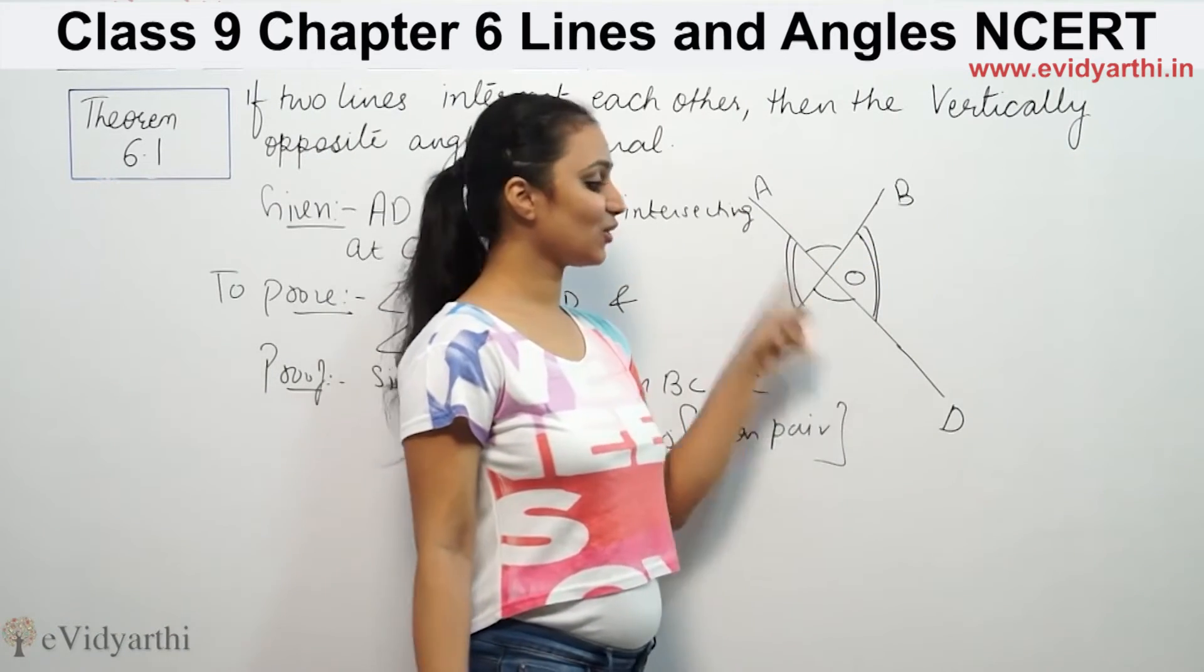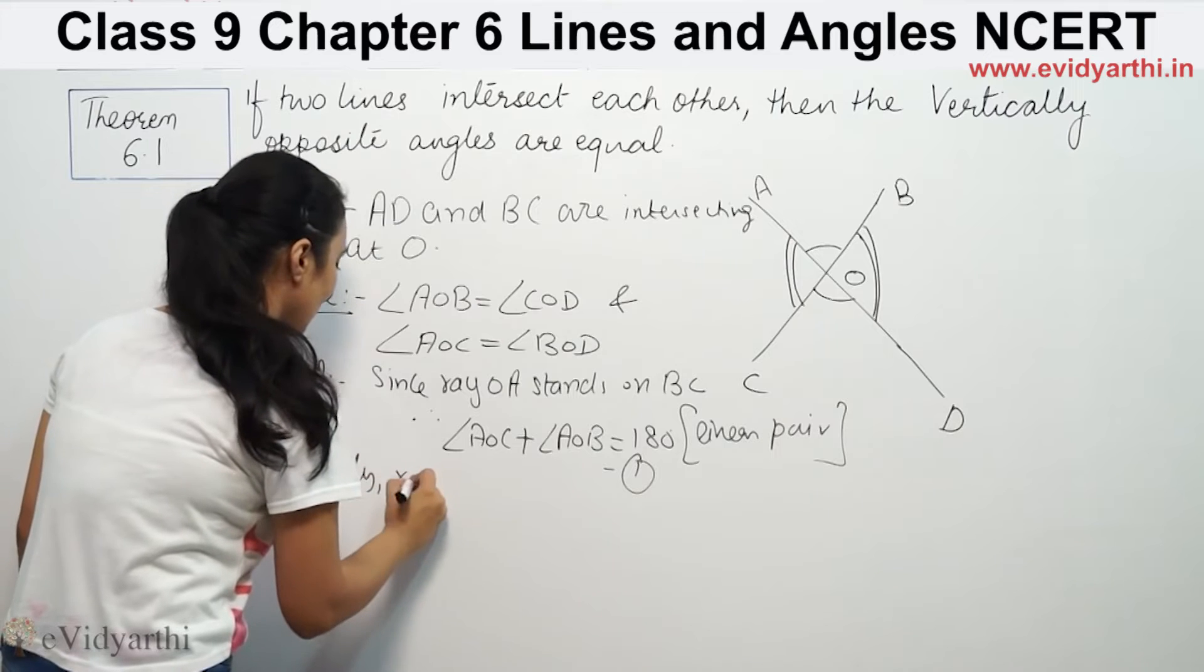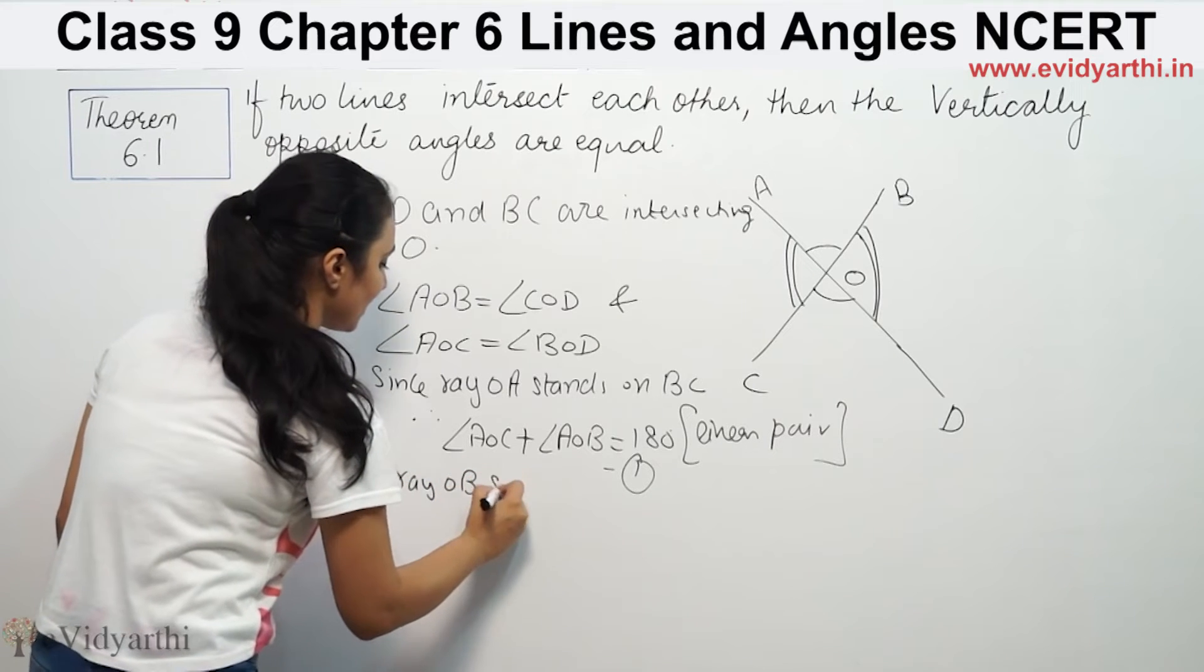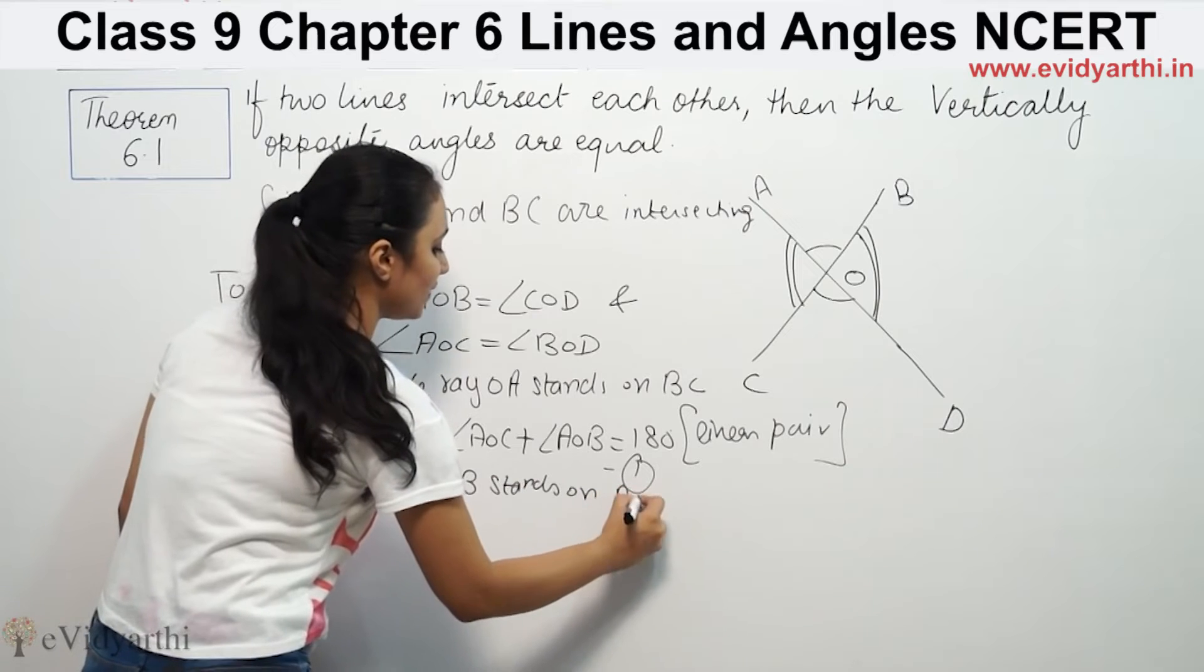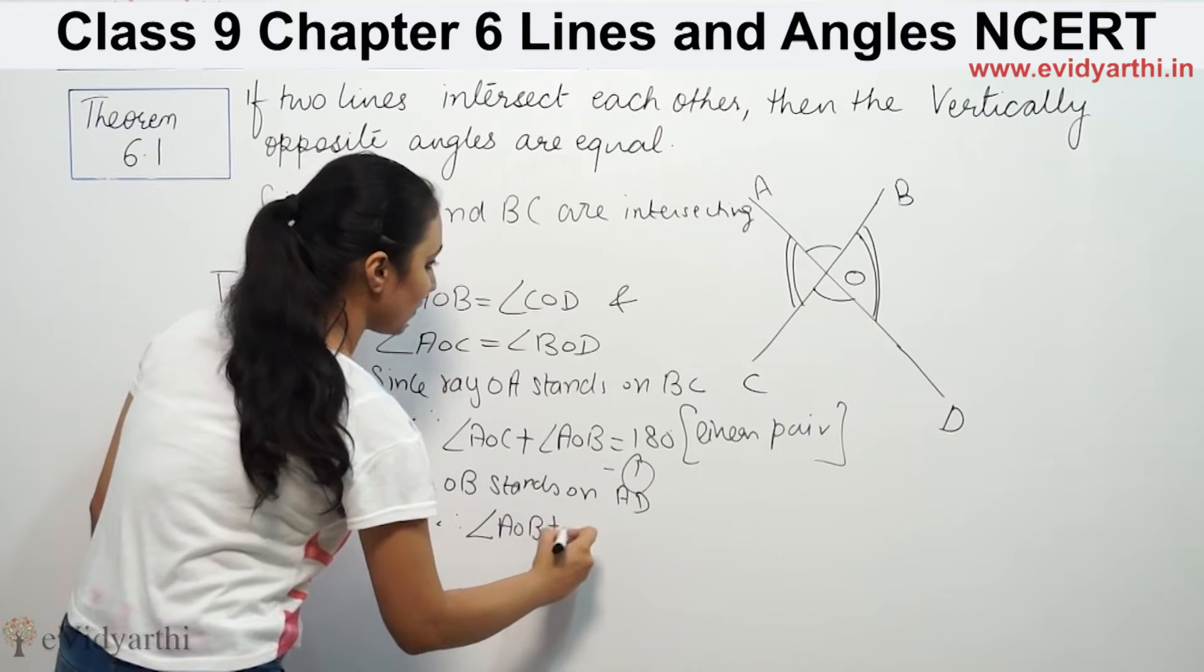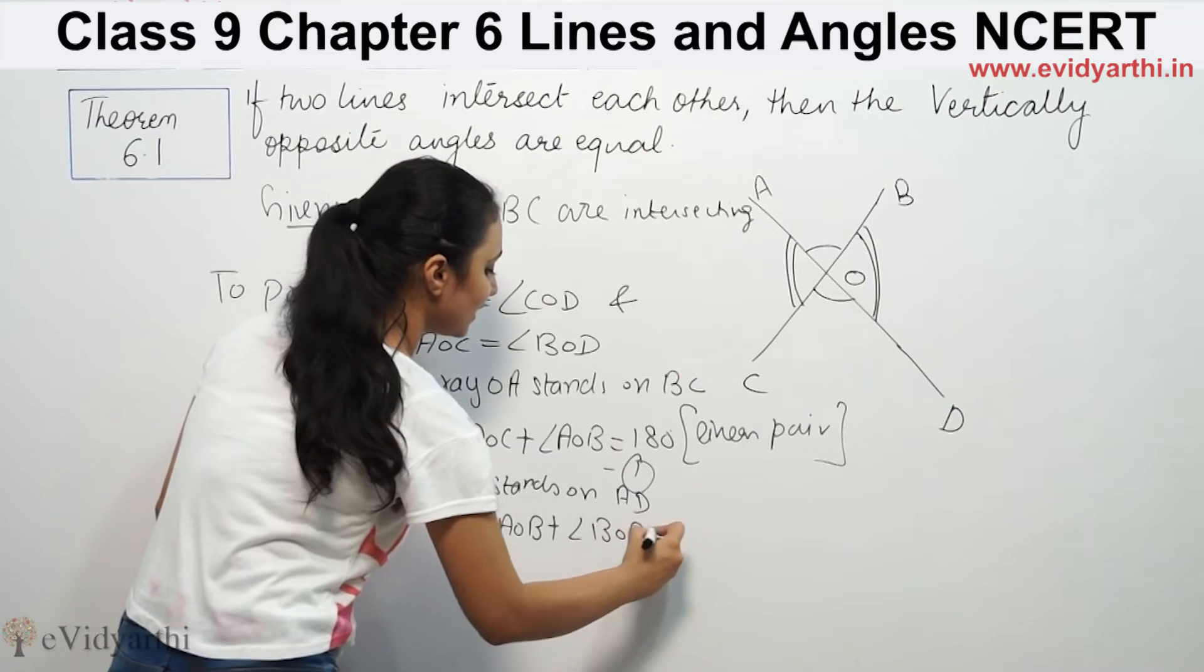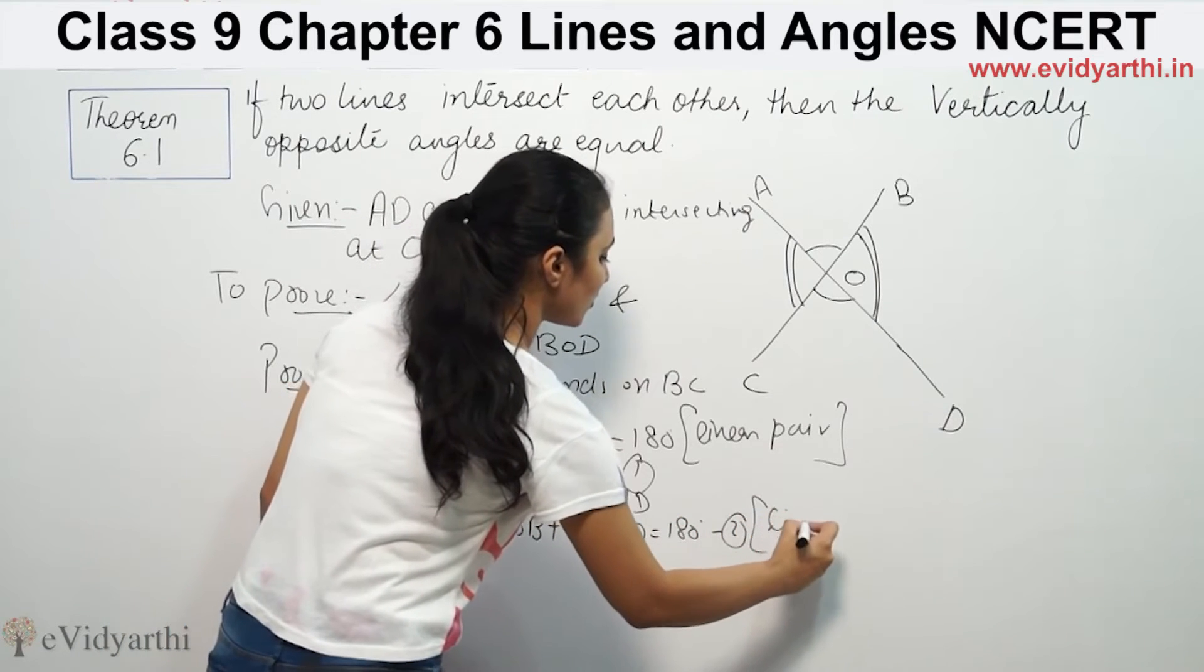Similarly, OB stands on AC. Therefore angle AOB plus angle BOD equals 180 degrees. This is also a linear pair.